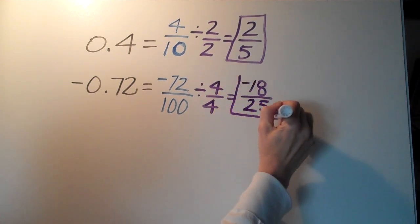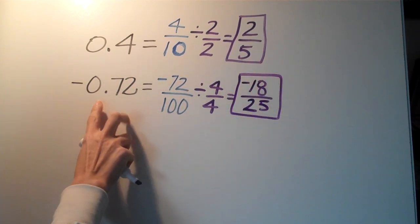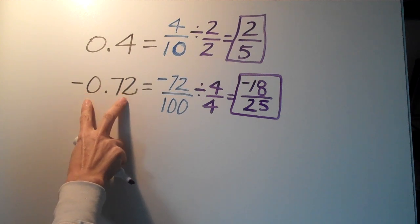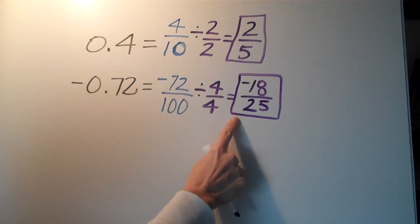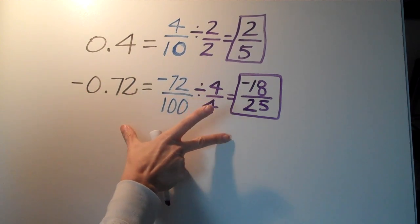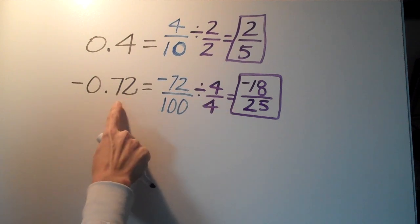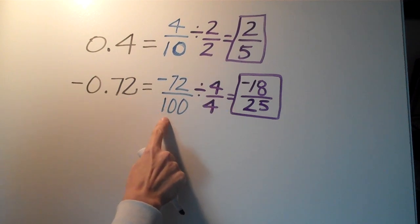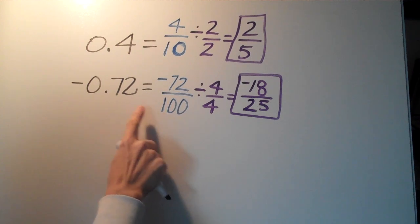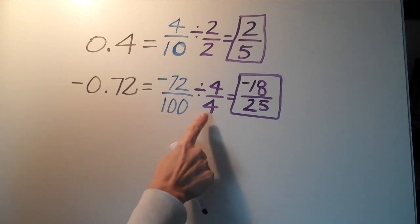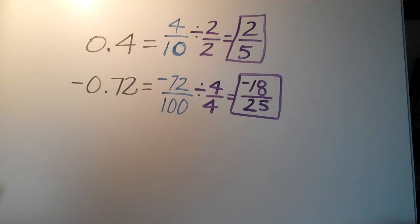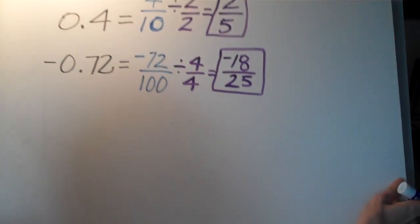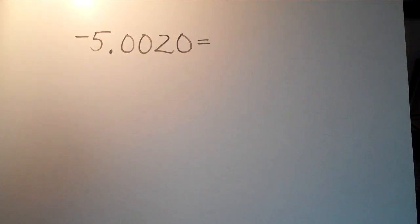Okay, so negative 72 divided by 4 is actually negative 18, and 100 divided by 4 is 25, and that's it. So we have another example where we have a negative decimal turning into a negative fraction. We keep the same signs, you just read the place value, put it over that place value. If it's 72 hundredths you put it over the 100, simplify, and you get your fraction.